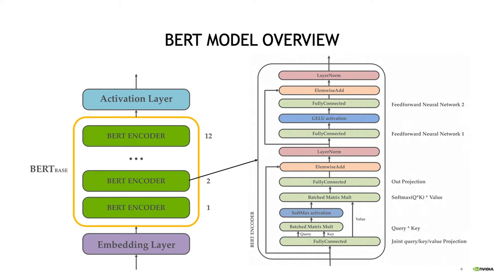Here on the right you can see more details about the encoder architecture. At the bottom you have the self-attention mechanism with the projection, the query and key multiplication, and the multiplication of the output of softmax and value, and then we have an output projection. The multiplication of query and key and the output of softmax and value needs to be done independently for each head, and therefore we need a batch matrix multiplication. At the top you can see the feed-forward neural network, where we have one fully connected layer followed by a GeLU activation, and then another fully connected layer.